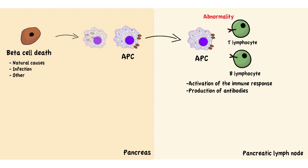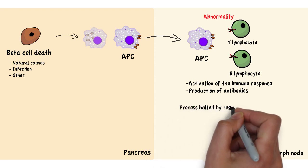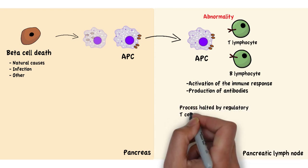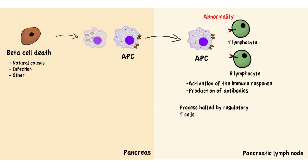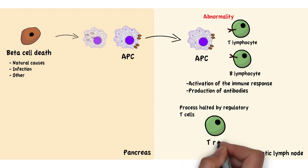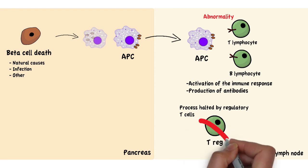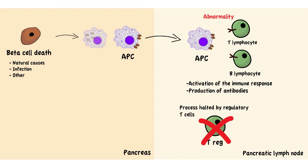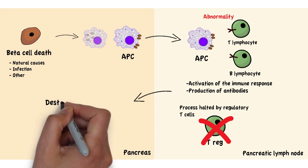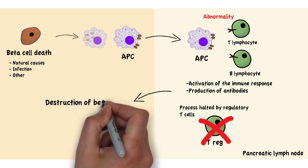However, this process is halted by regulatory T cells, as it recognizes that that is not supposed to happen. Due to reasons that we don't fully understand, this regulation stops at some point, and the immune system proceeds to destroy pancreatic beta cells.